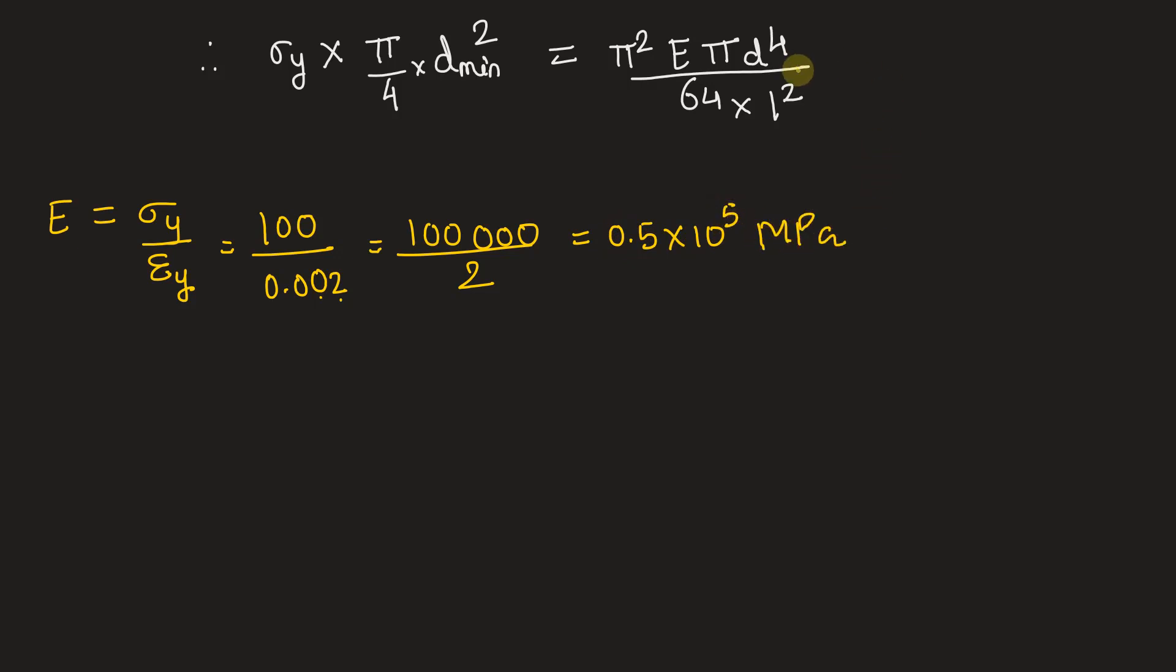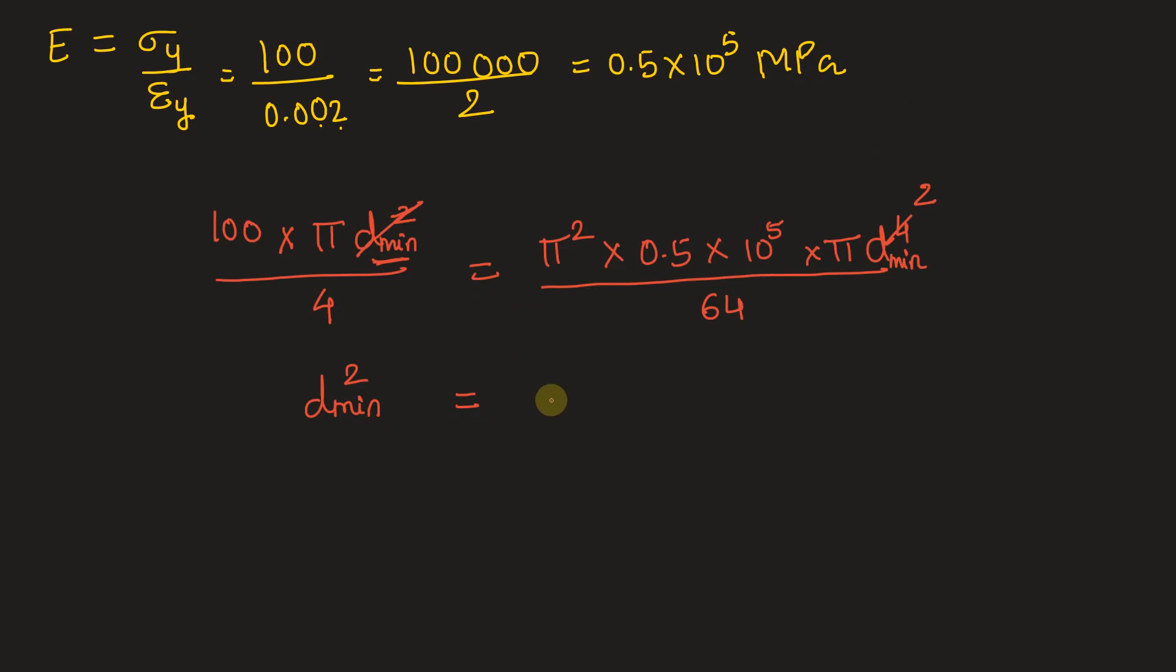Just putting this, the first value in the sequence, we get D min square is equal to 100 into pi into 64 divided by 4 into all of the numerator values, 4 into pi square into 0.5 into 10 to the power of 5 into pi.